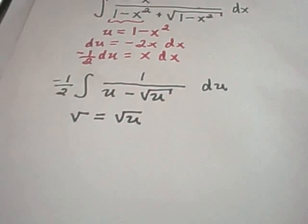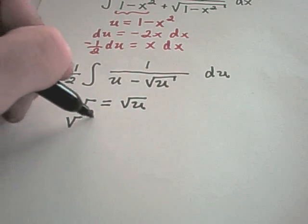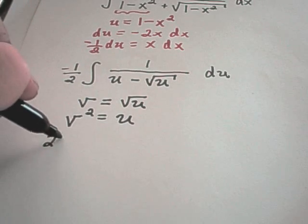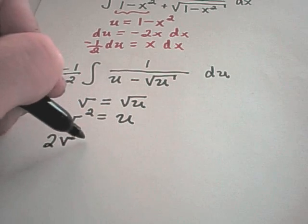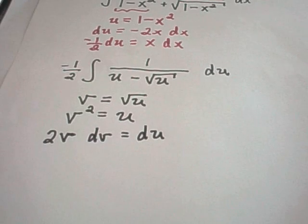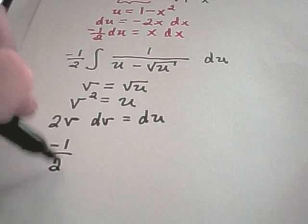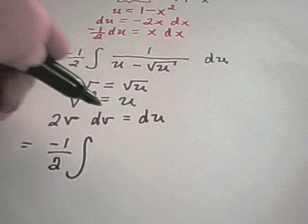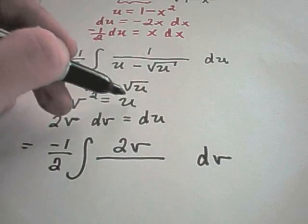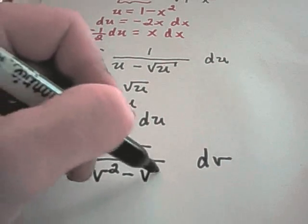So what I'm going to substitute in now is v equals square root of u. Okay, so I'm going to replace this square root of u. And to calculate my du term, I'm going to square both sides and get v squared equals u. I'll take the derivative and I'll get that 2v dv is equal to 1 du.